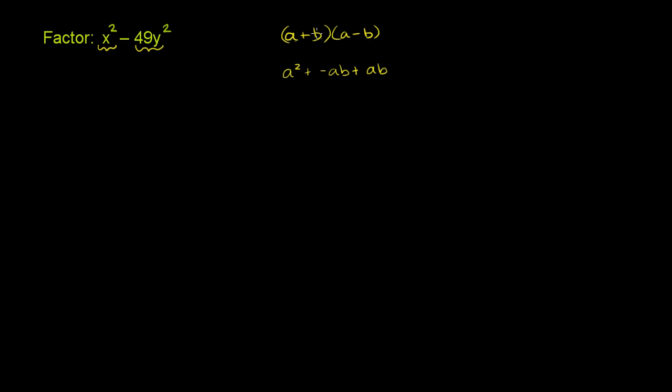And then you have b times negative b, so it would be minus b squared. Now these middle two terms cancel out. Negative ab plus ab, they cancel out. And you're left with just a squared minus b squared.